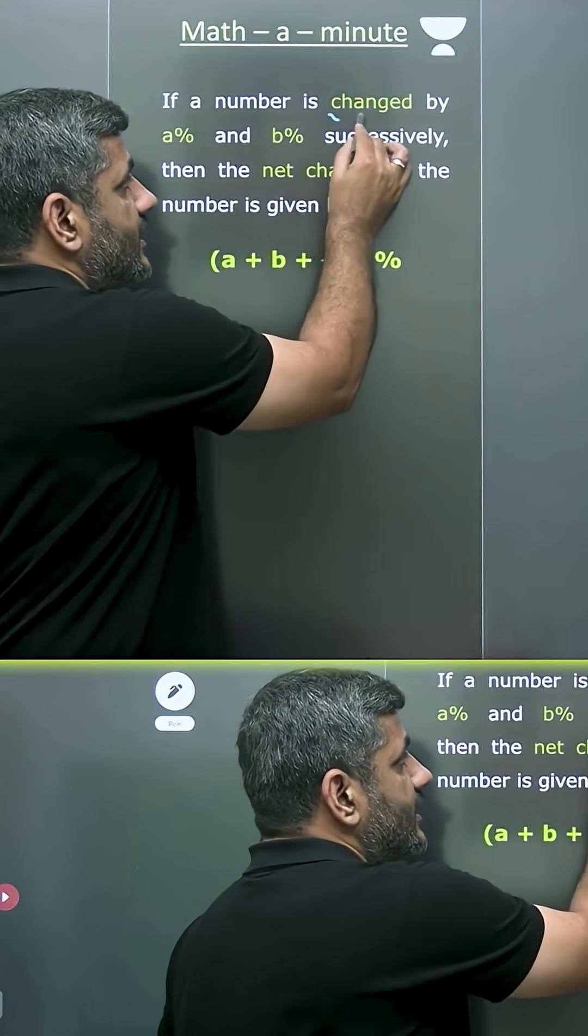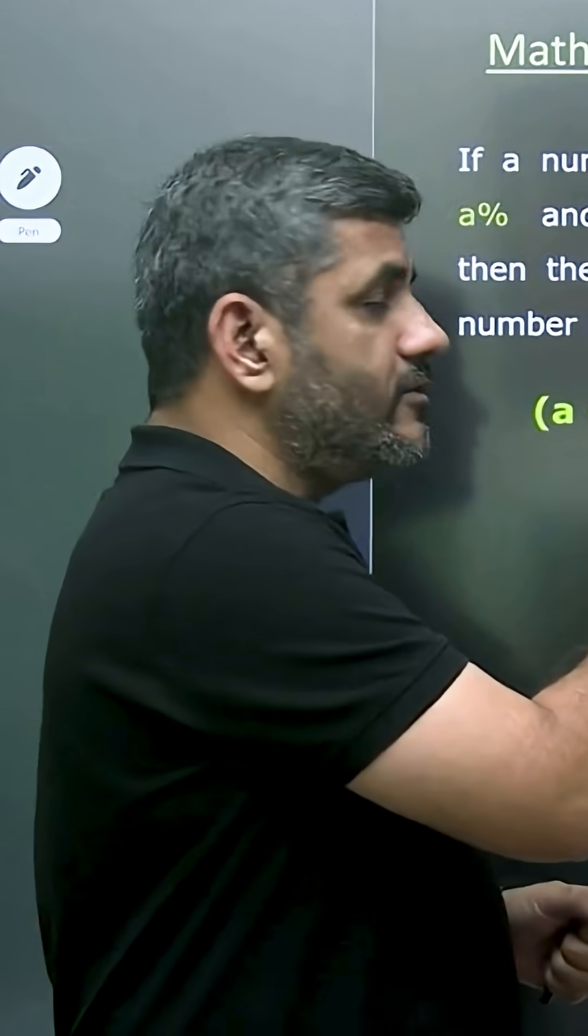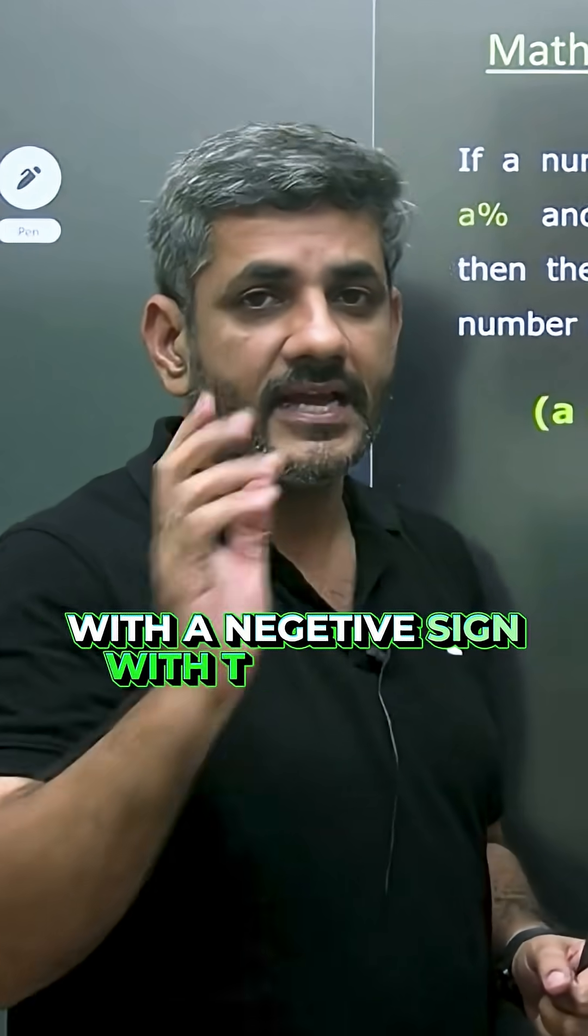And here I have used the word 'changed,' which means if a decrease is happening, then you use the formula with a negative sign for that number.